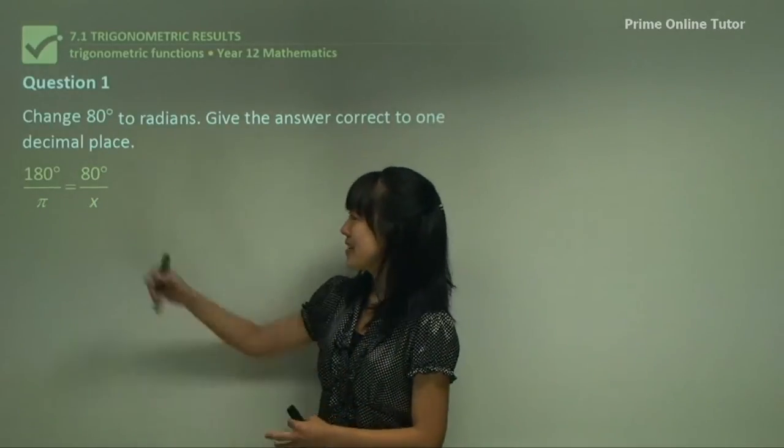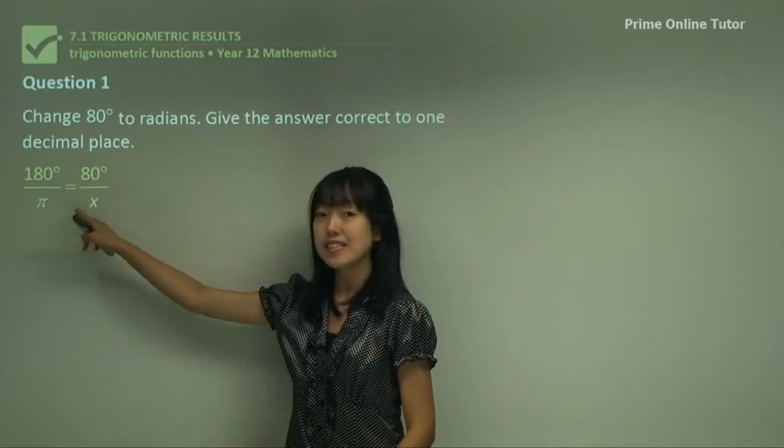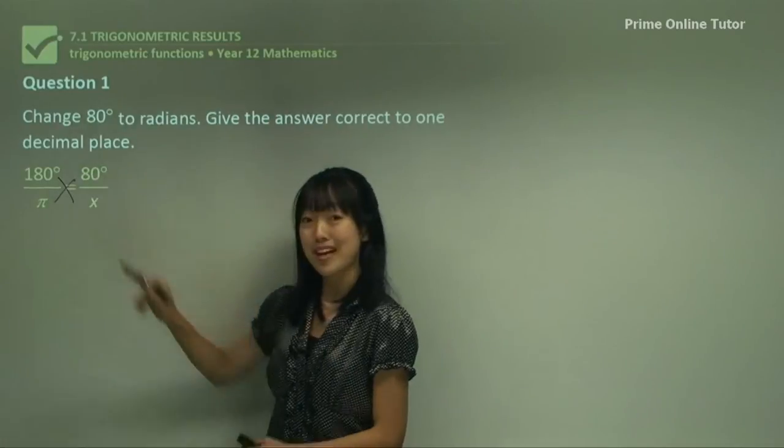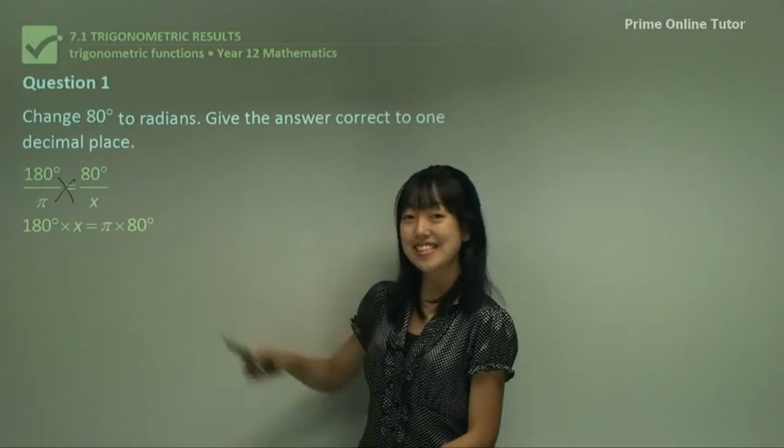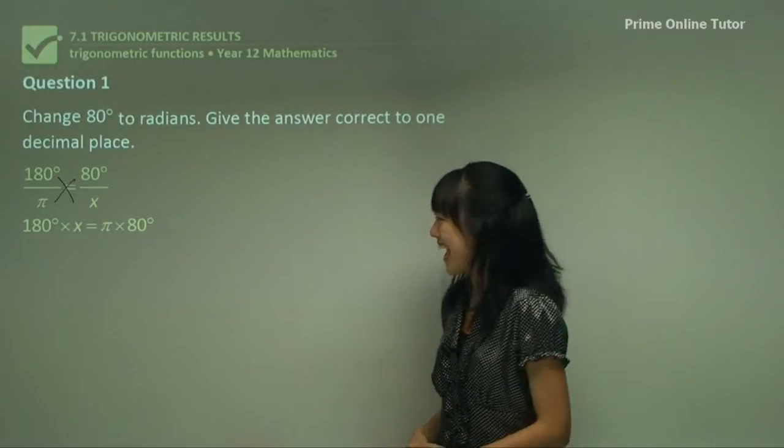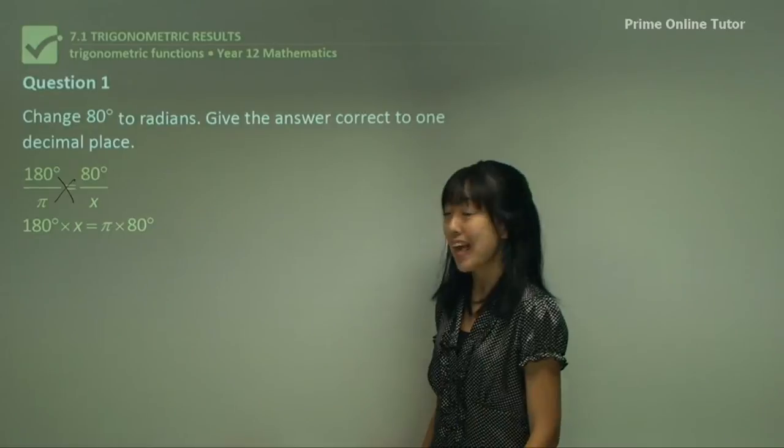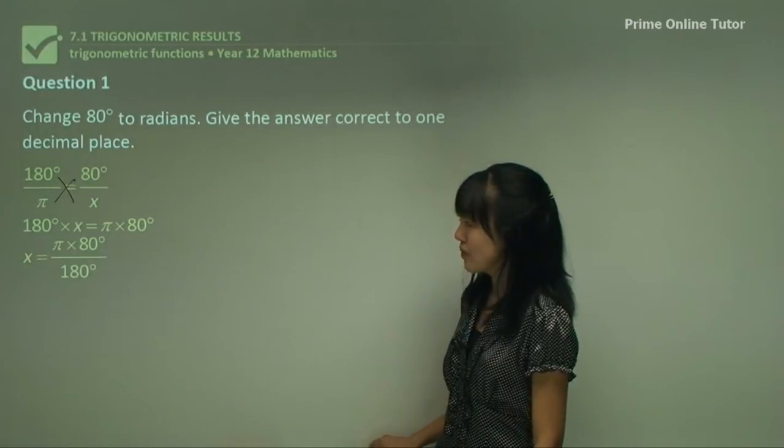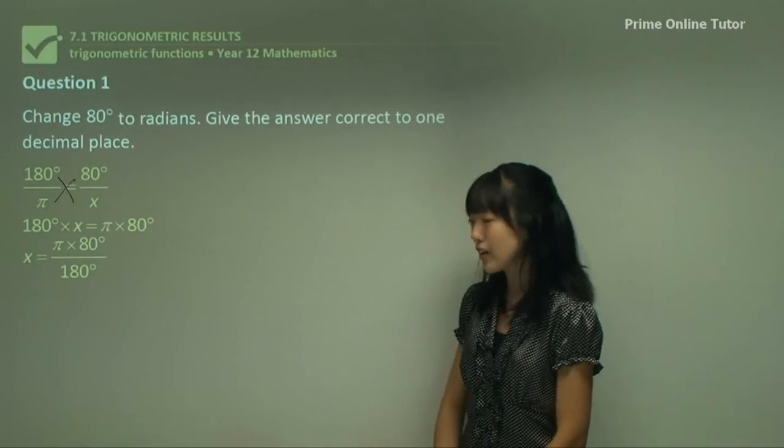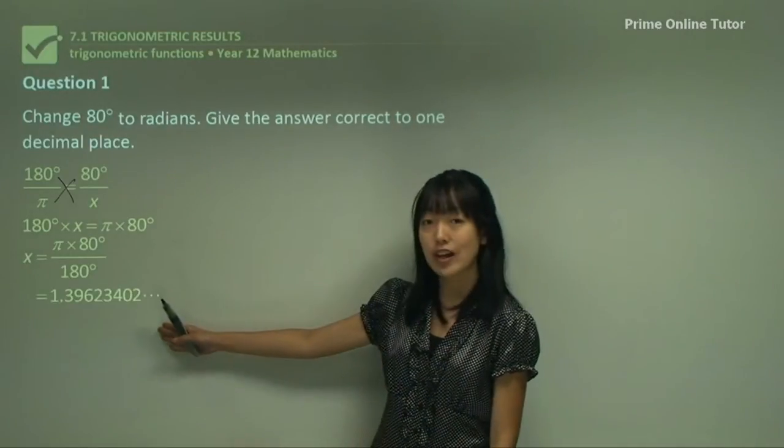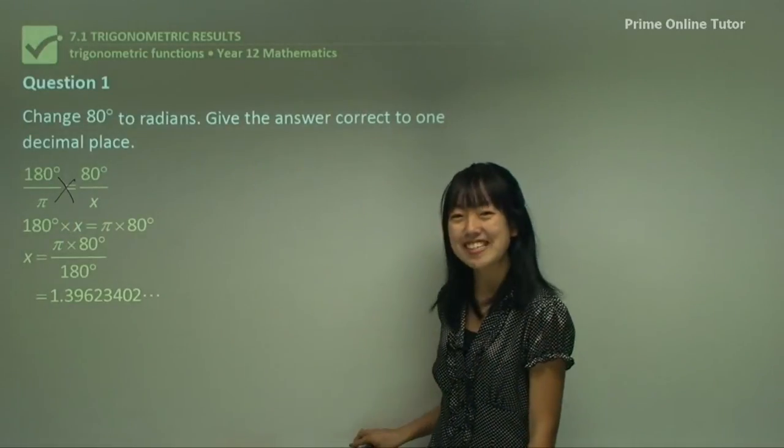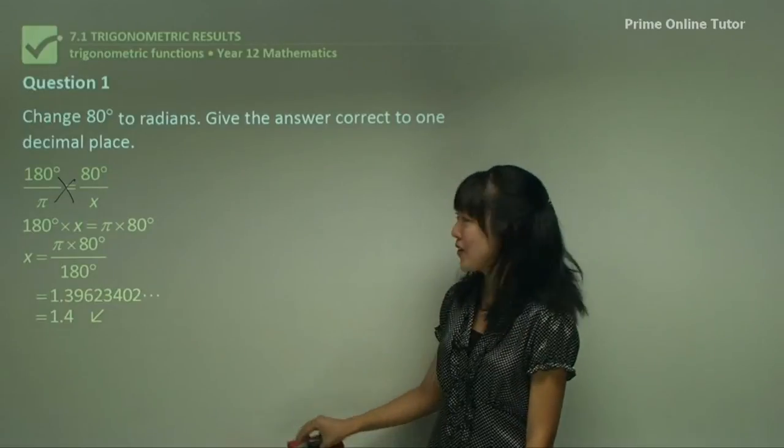Whenever you see an equal sign on either side of the fraction, all you need to do is cross multiply. That is the step where we've cross multiplied. Now we're going to divide throughout by 180 degrees because we want to make x the subject. When we do we get this. Now grab your calculator, put it in, and you'll get this value. We have to round up to one decimal place so you'll get a final answer of 1.4. Excellent.